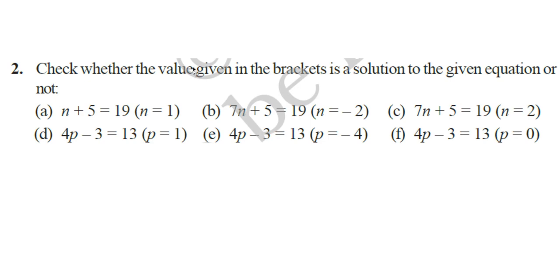Here, check whether the value given in the bracket is a solution of the given equation or not. The first question, n plus 5 is equal to 19. And the value given is n is equal to 1. Now, when n is equal to 1, n plus 5 is equal to 1 plus 5, which is equal to 6. But, n plus 5 is equal to 19 given. Therefore, n is equal to 1 is not a solution. Similarly, you can do the other problems too.